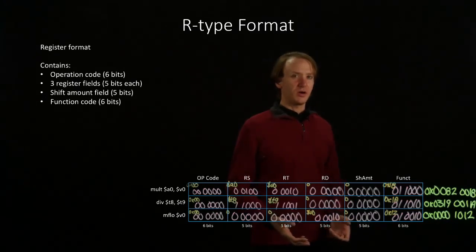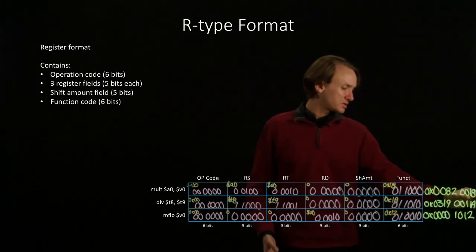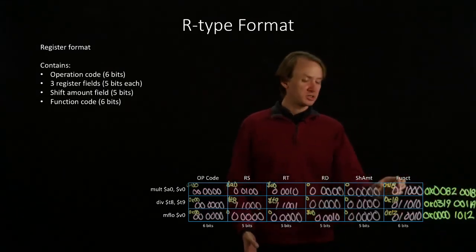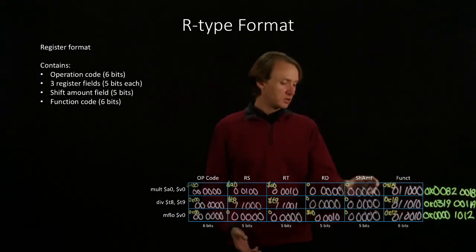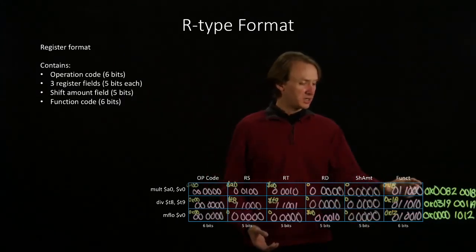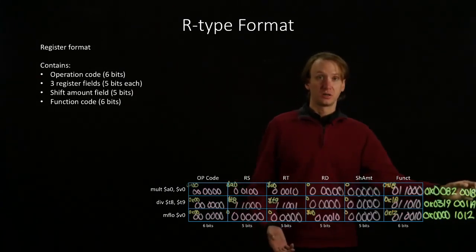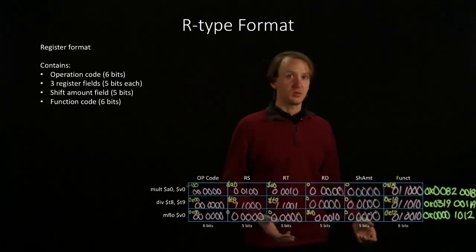One nice thing to notice about R-type instructions is that, quite often, the last two hexadecimal digits correspond to the function code. Unless we've got something in our shift amount field, we'll really just end up copying in these six bits as the last two digits of our instruction. This can make it pretty easy to see quickly what type of instruction we've got here.